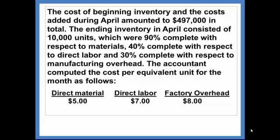The ending inventory in April consisted of 10,000 units, which were 90% complete with respect to materials, 40% complete with respect to direct labor, and 30% complete with respect to manufacturing overhead. The accountant computed the cost per equivalent unit for the month as follows: direct material is $5, direct labor is $7, and factory overhead is $8.